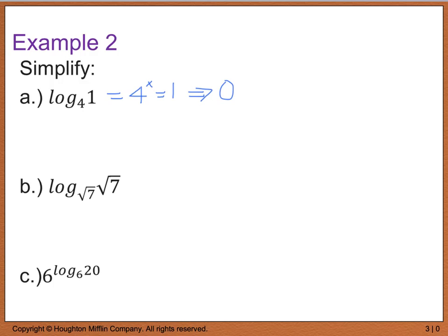Likewise, part b says log base the square root of 7 of the square root of 7 equals, well I can rewrite this as the square root of 7 to what power will give me the square root of 7? And that's going to give us the first power. So the square root of 7 to the first power is going to give us the square root of 7.